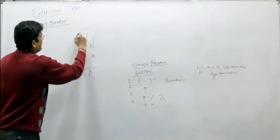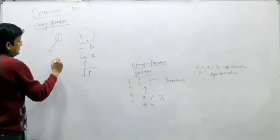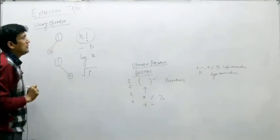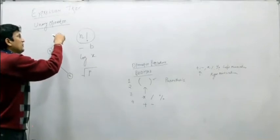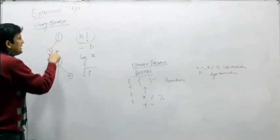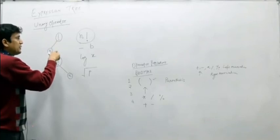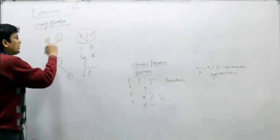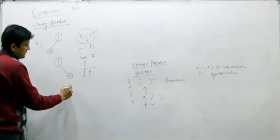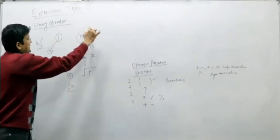Let us first build the expression tree for factorial n. Two types of expression trees are possible: one with the operand on the left, and one with the operand on the right. Operators always appear at internal nodes and operands as leaf nodes. We select the correct tree based on which one yields the original expression when an in-order traversal is performed.